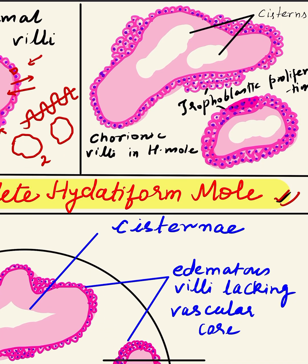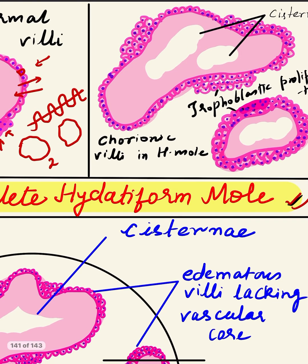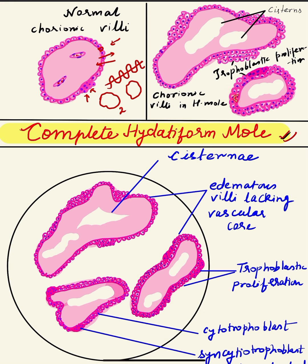In complete H mole, all the villi are affected, while in partial mole some villi are normal. In complete mole, the villi are lined by cytotrophoblast and syncytiotrophoblast but with proliferation occurring in multiple layers — focal trophoblastic proliferation of both cytotrophoblast and syncytiotrophoblast. The villi are of variable size and are generally dilated. The core shows hydropic degeneration, colored with light pink, and there are empty spaces known as cisterns, with lack of any vascularity.